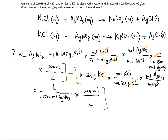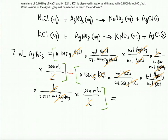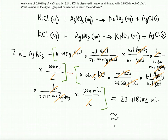The liters cancel and only milliliters remain. Adding both calculations together — remembering to multiply by 1000 in both cases and to add the two results — gives 23.418102 milliliters. Rounding to four significant figures (each number in the problem has four significant figures), the eight pushes the one up to two, giving a final answer of 23.42 milliliters. Thanks for watching!